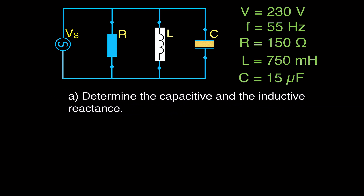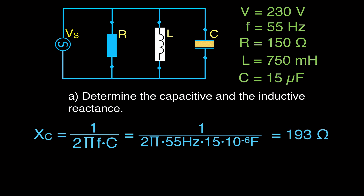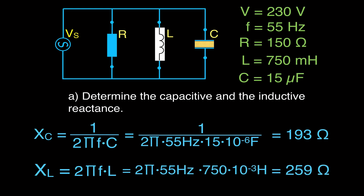We're going to start with the inductive and capacitive reactance. We have RLC — all three things — so we'll go step by step. The capacitive reactance is 1 over 2πfC. Plugging in the values, you should get 193 ohms. The inductive reactance is 2πfL, and you should get 259 ohms. Make sure you can do that in your calculator — you can pause the video and check those values.